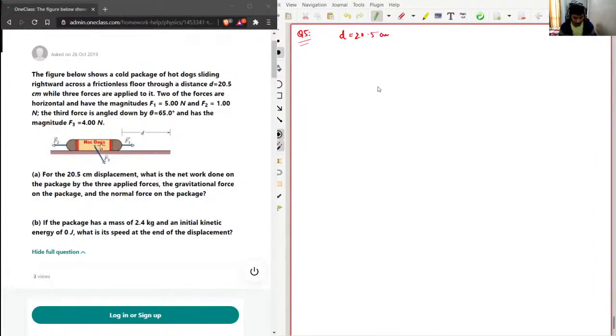For the 20.5 centimeter displacement, what is the net work done on the package by the three applied forces, the gravitational force on the package, and the normal force on the package? And if the package has a mass of 2.4 kilograms and an initial kinetic energy of zero joules, what is its speed at the end of the displacement?